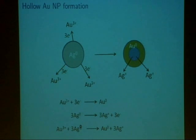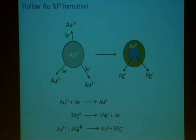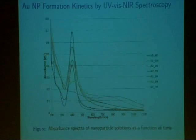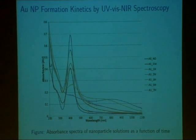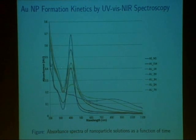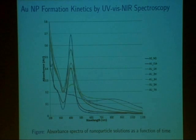We ran this reaction and took samples at various time points to follow the reaction progress. The first way we characterized these samples was through UV-visible and NIR spectroscopy. There are a couple of important things to notice about these spectra. Many of the samples have a peak at around 400 nanometers — this peak is characteristic of silver nanoparticles, not gold.